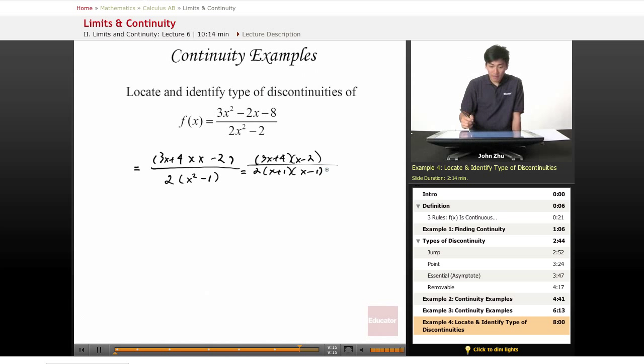So now we have this giant simplified version of the function. So what are the discontinuities? Well, we know that here there are two asymptotes at x equals positive and negative 1. And that's about all we can see from this function.